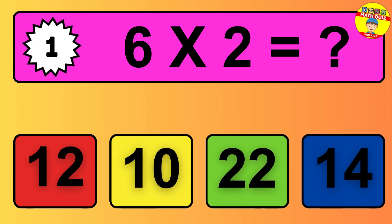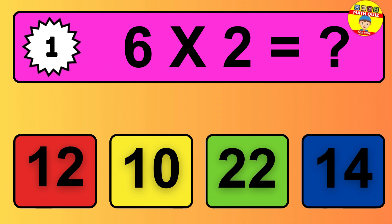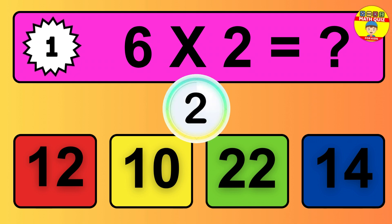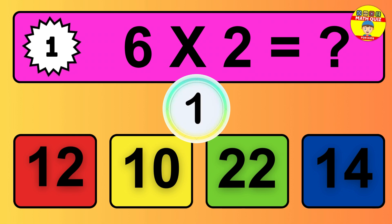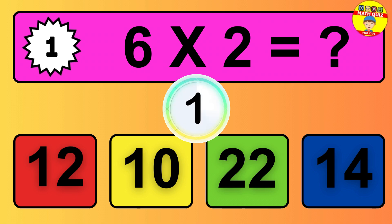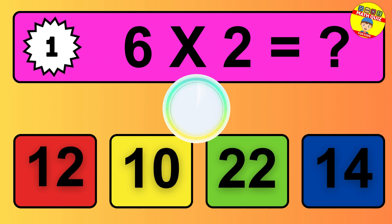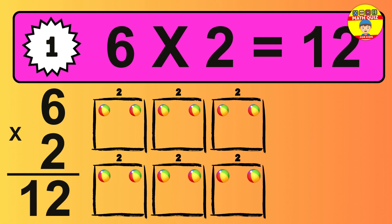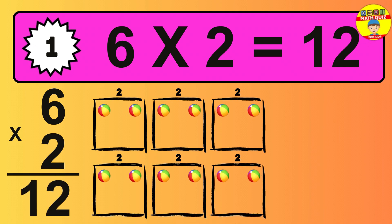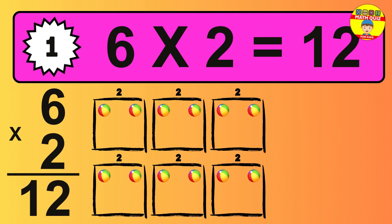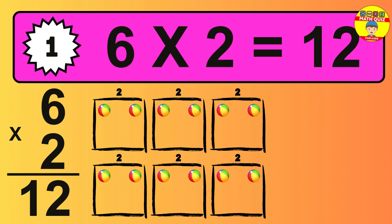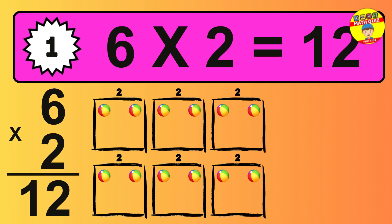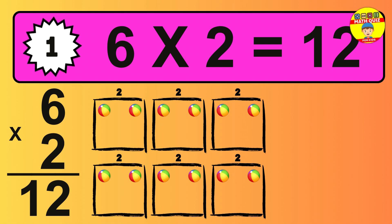Question 1. 6 times 2 equals what? The answer is 6 times 2 is 12. To calculate, we have 6 groups with 2 balls each one. So how many balls do we have? 12 balls.